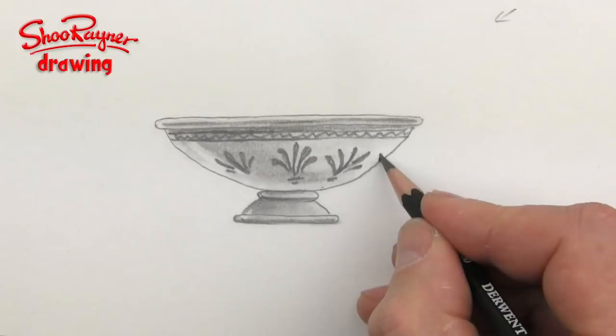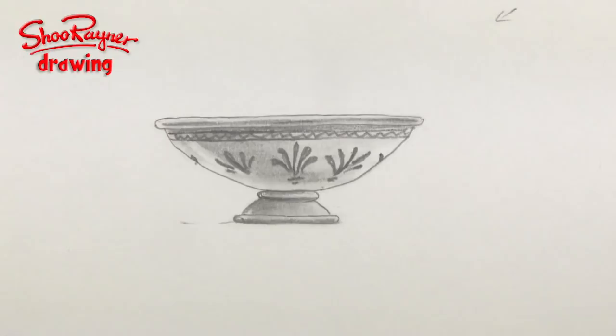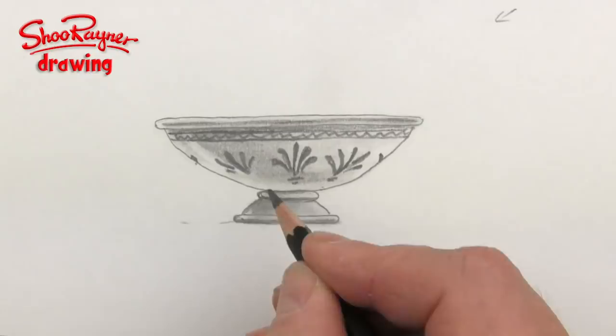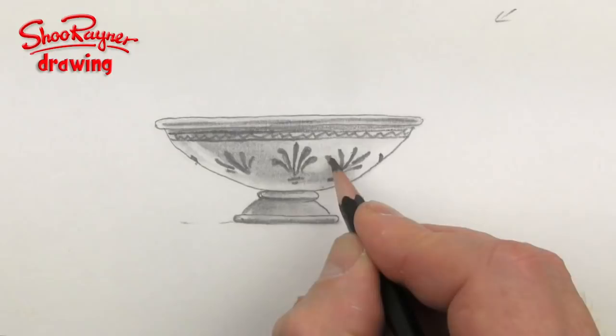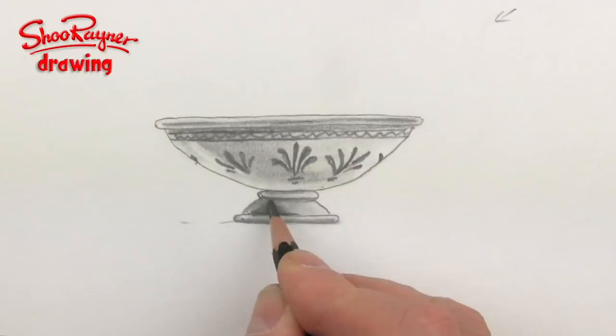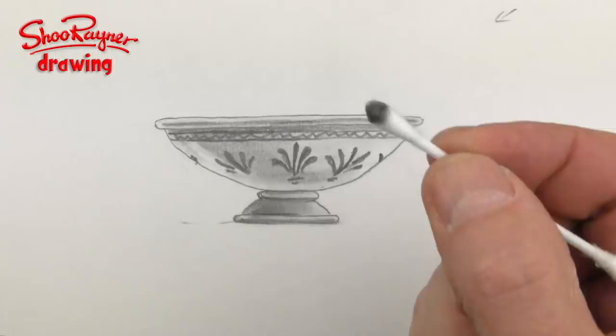But it shows you how you can get that photographic effect. And then because this is the darkest area here, you're going to want to keep making that darker and the edges a bit lighter. And you can just keep adding and tidying and blending with your cotton bud which gives it that look.